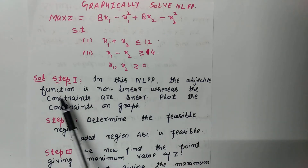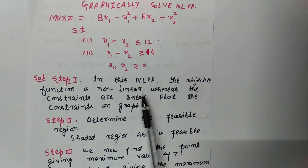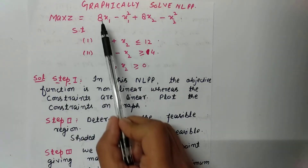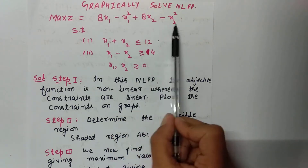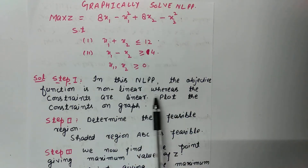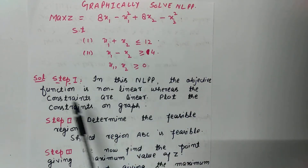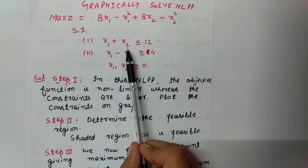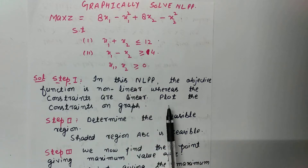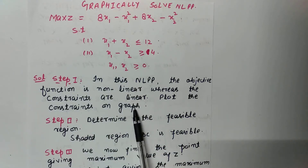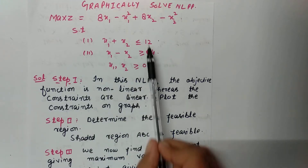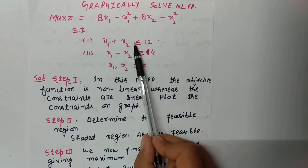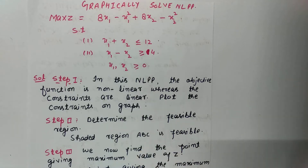Let us start with the first step. In this nonlinear programming problem, the objective function is nonlinear — see here, the objective function is nonlinear — whereas the constraints are linear. Now we will plot the constraints on the graph.